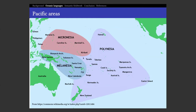These languages are all considered oceanic because they're more closely related than the rest of the Austronesian languages. There are some other languages in the area of Melanesia — for example, Papuan languages, which are considered to have a different origin. But oceanic languages go all around the coast of Papua New Guinea and throughout the Pacific Ocean. Here again we can see Vanuatu, which consists of several small islands.